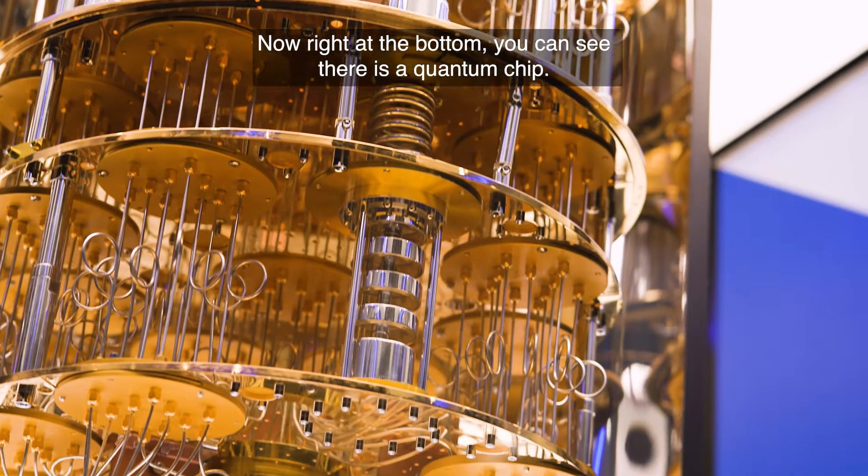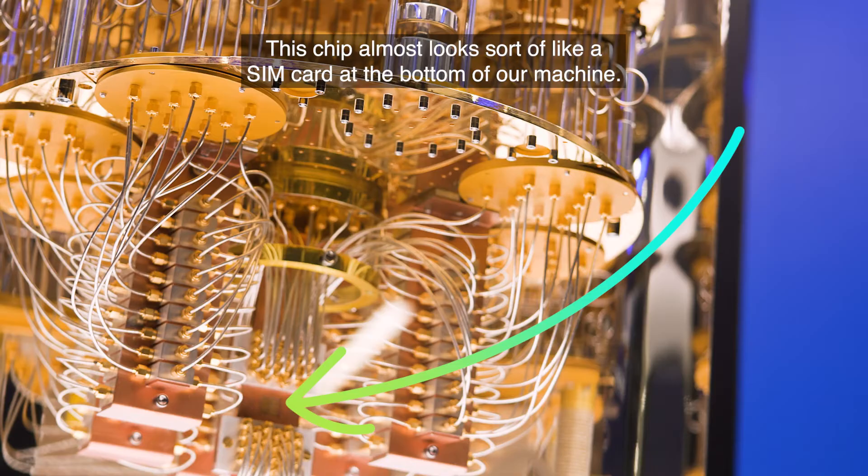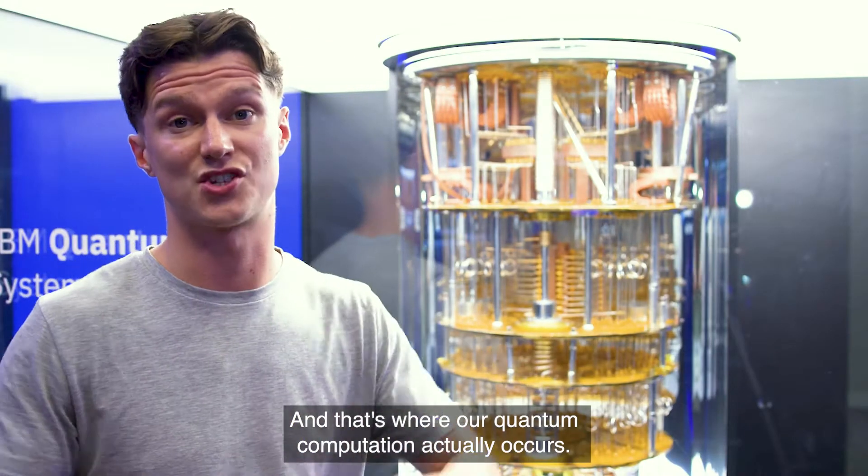Now right at the bottom you can see there is a quantum chip. This chip almost looks sort of like a SIM card at the bottom of our machine, and that's where our quantum computation actually occurs.